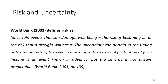The World Bank's 2001 definition defines risk as uncertain events that can damage well-being — for example, the risk of becoming ill or the risk that a drought will occur — and the uncertainty that can pertain to the timing or magnitude of the event. For instance, the seasonal fluctuation of farm income is an event you can know in advance, but you don't know the severity. It is not always possible to predict the magnitude of a hazard or shock — you may know when flash floods or high temperatures will occur, but the extent and consequences of that event are difficult to predict.